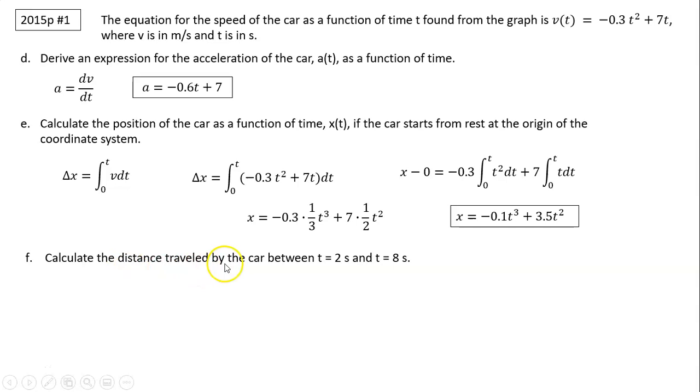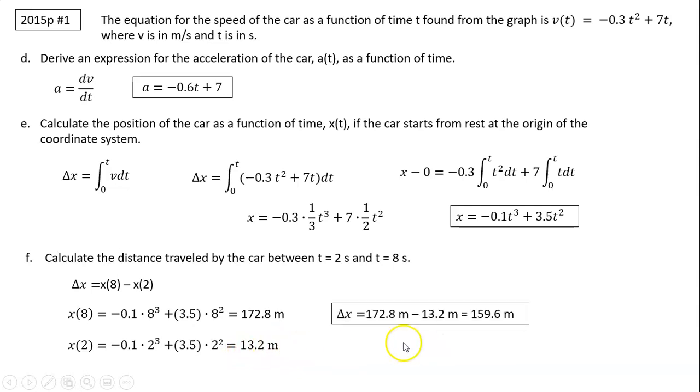Part F: Calculate the distance traveled by the car between t equals 2 seconds and t equals 8 seconds. We already know x, so we can find the distance at 8 seconds and the distance at 2 seconds, then simply subtract those two. Substitute your timing. x at 8 is 172.8 meters, and x at 2 seconds is 13.2 meters. Subtract the two numbers. You should have 159.6 meters.